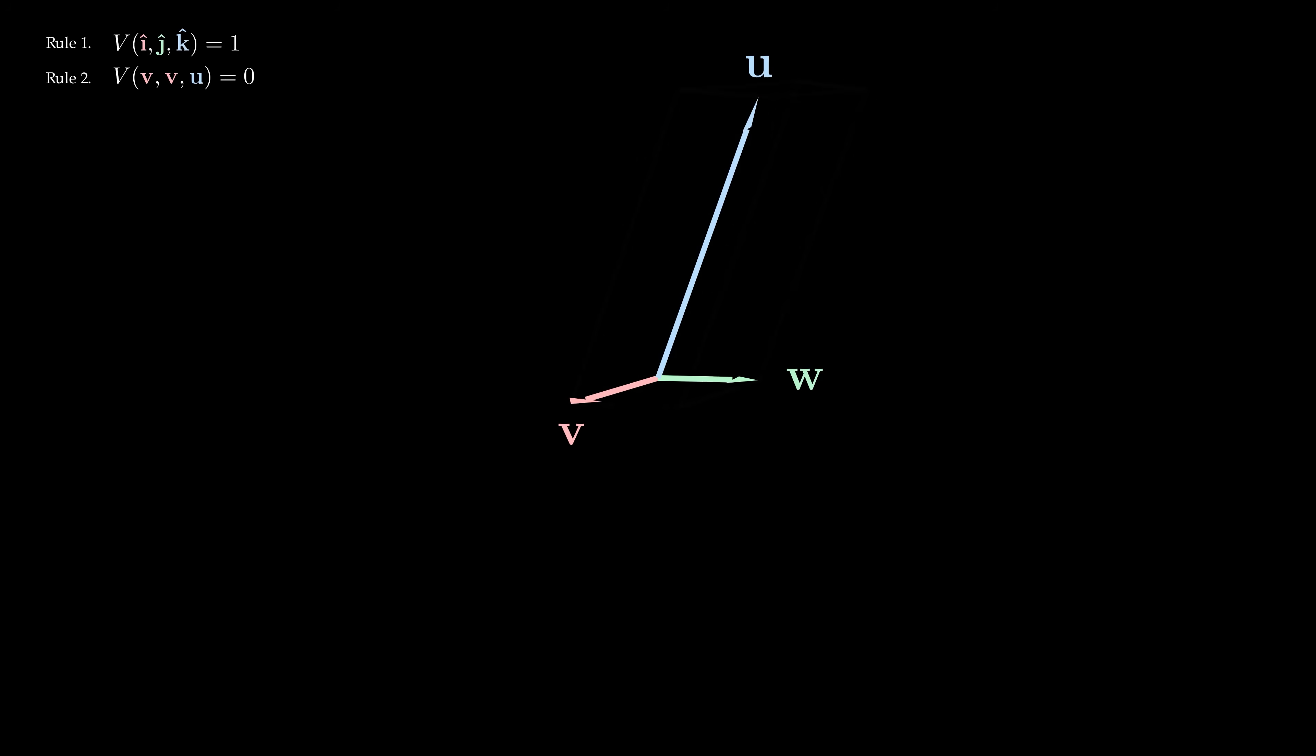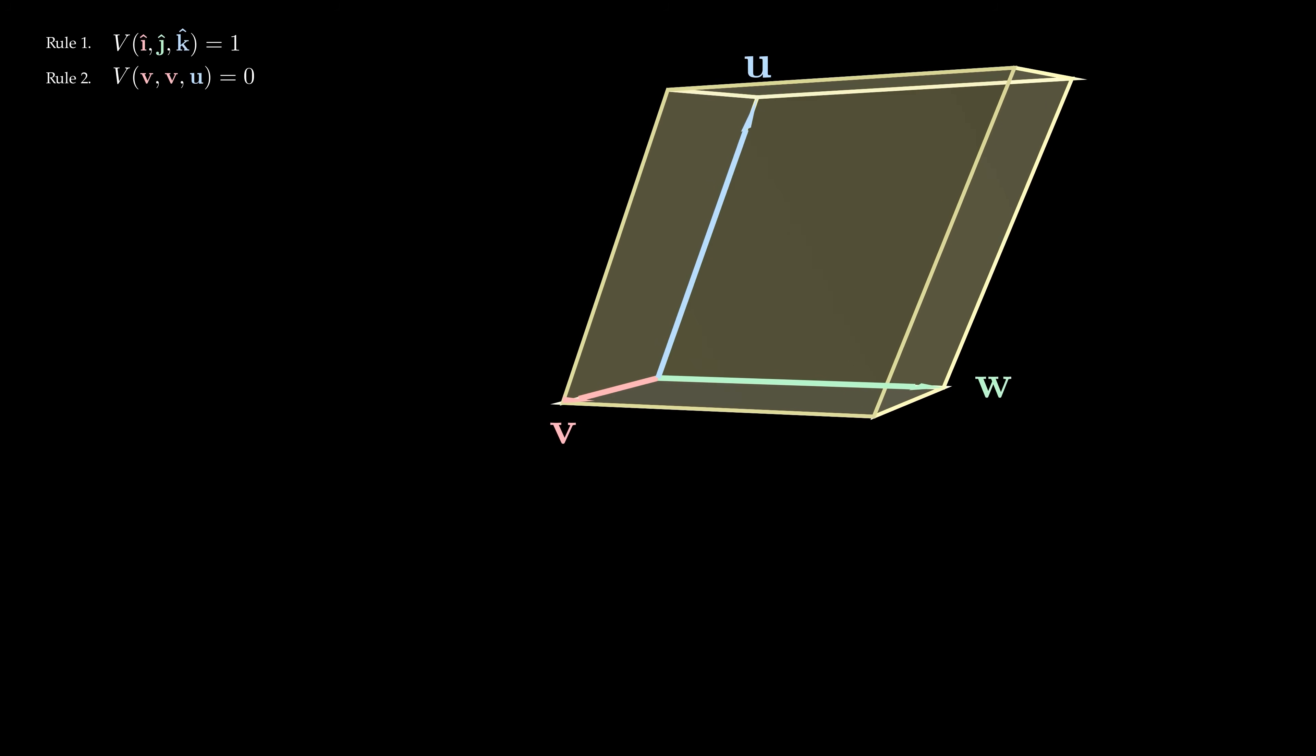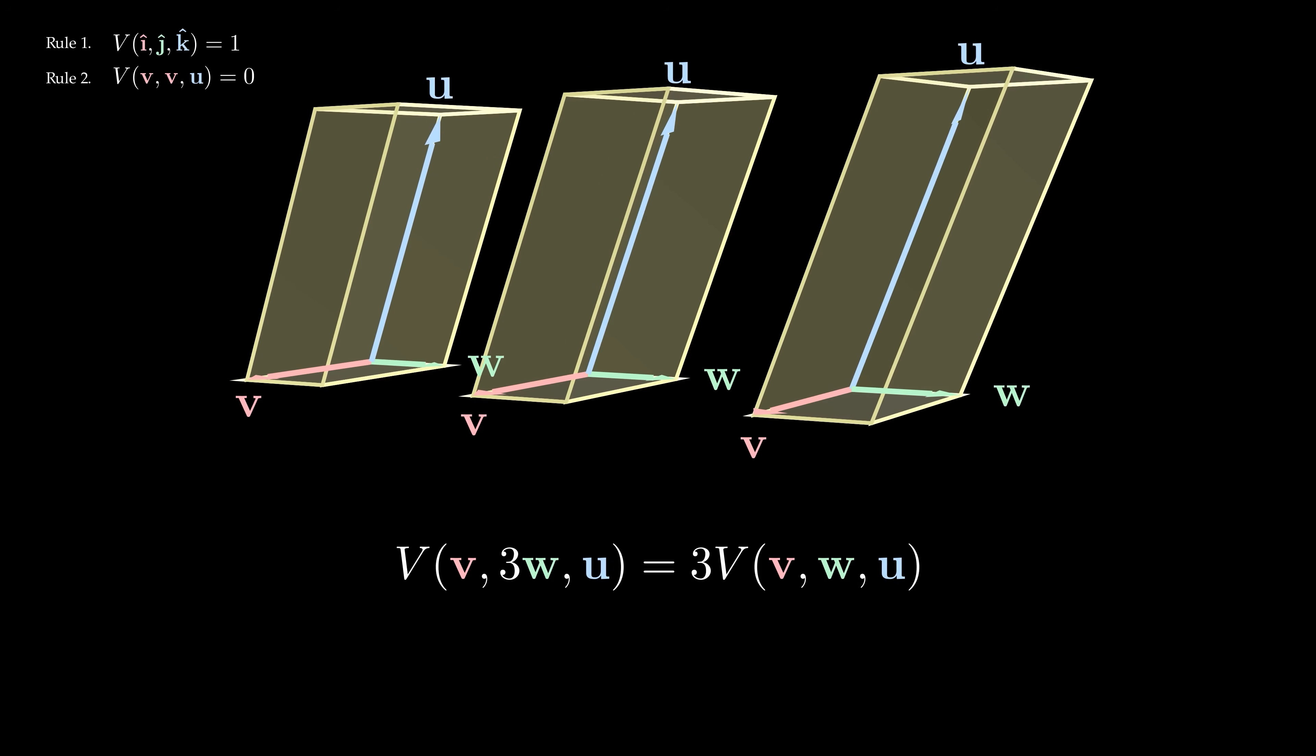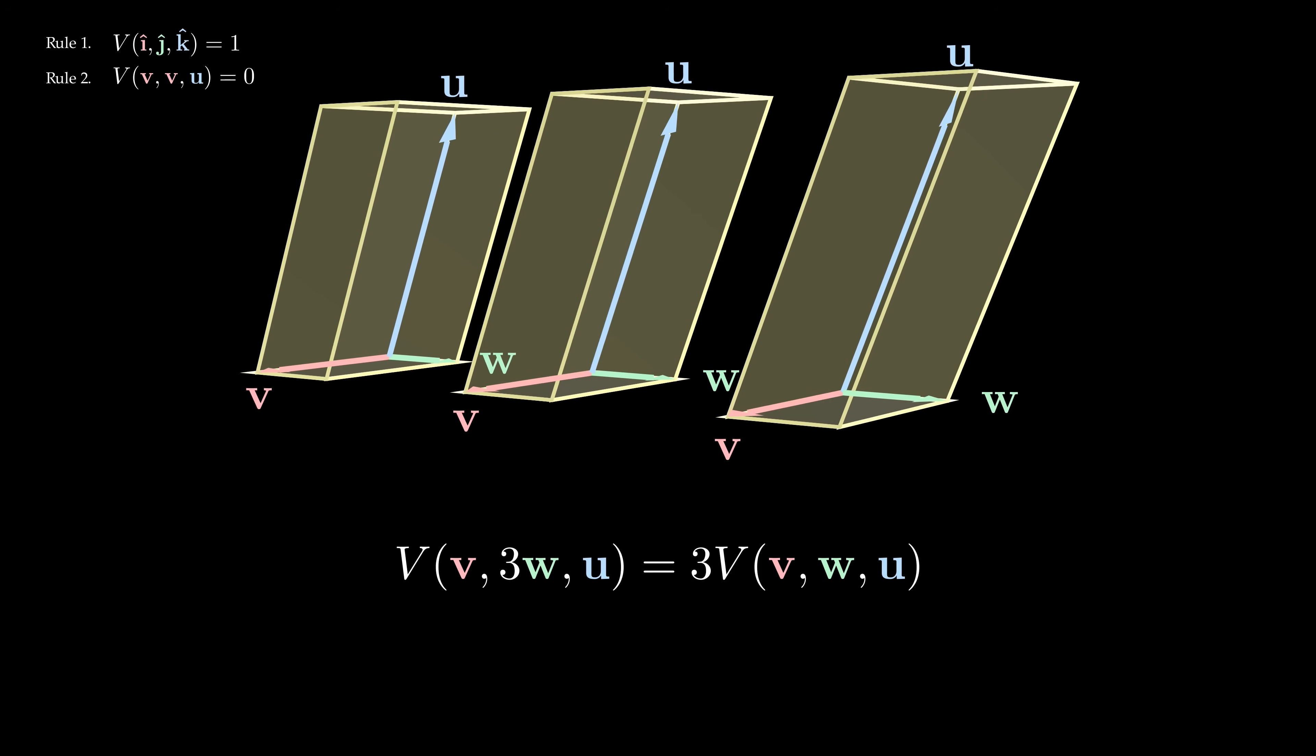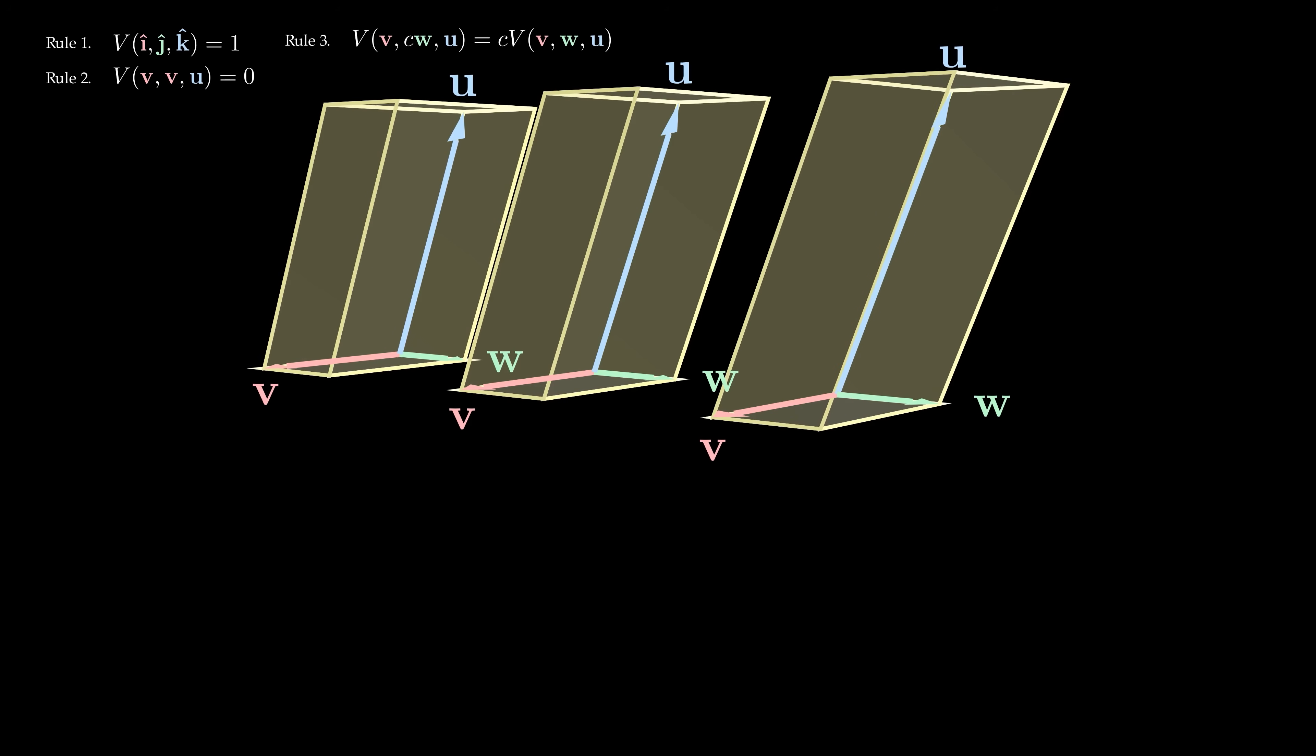Much like before, if I scale w by a factor of 3, then the parallelepiped volume gets tripled. The same thing happens if I scale the vector u or the vector v. We can replace this constant 3 with any constant c, positive or negative.